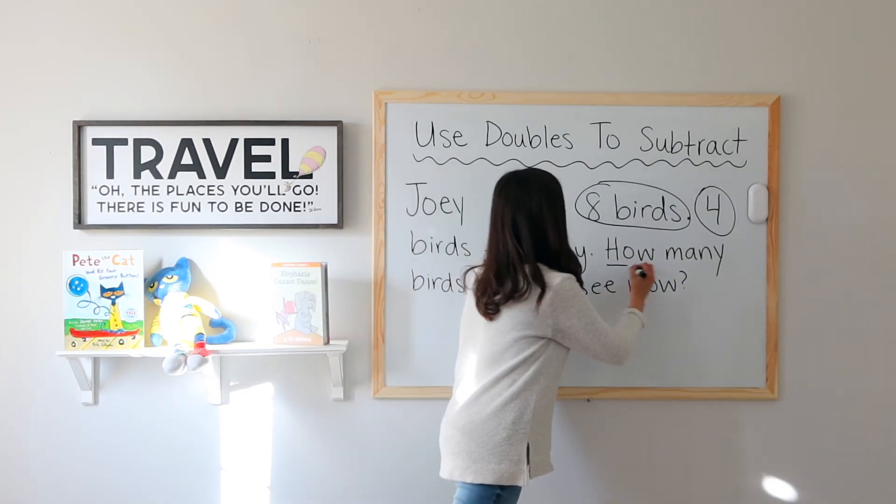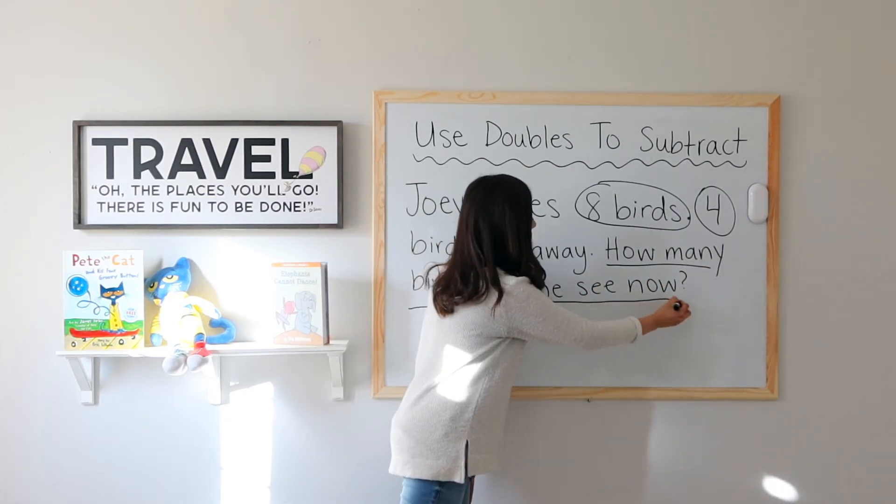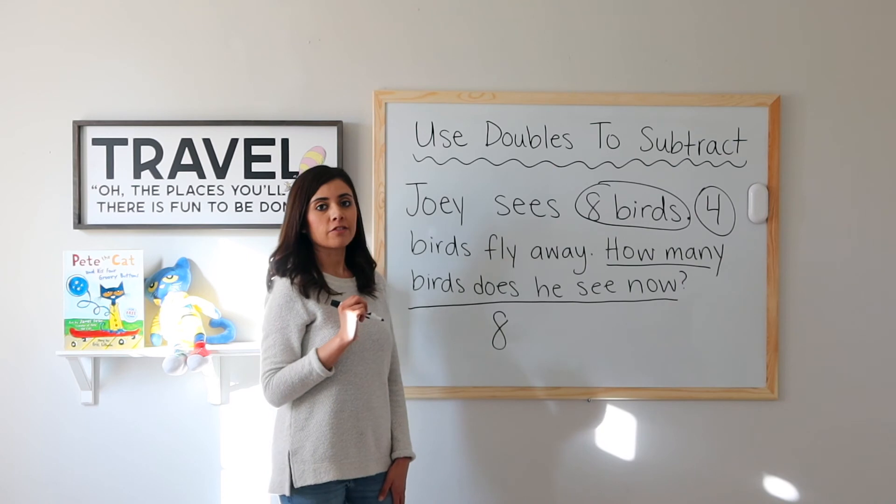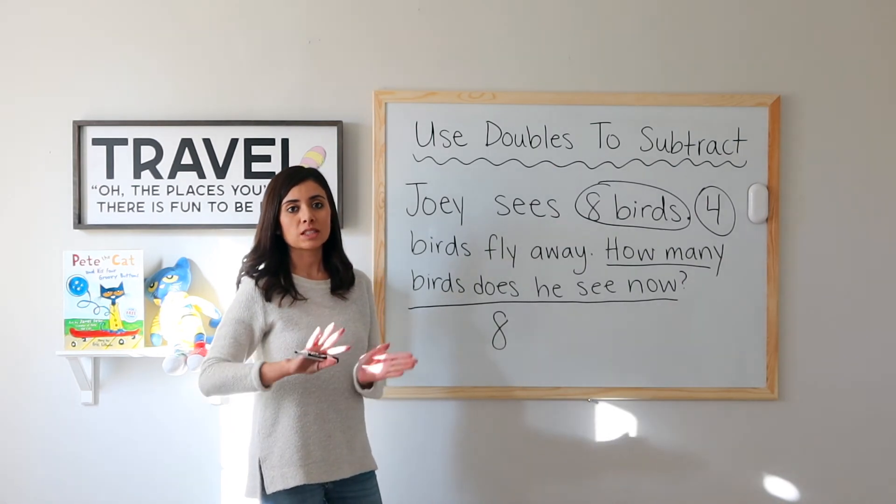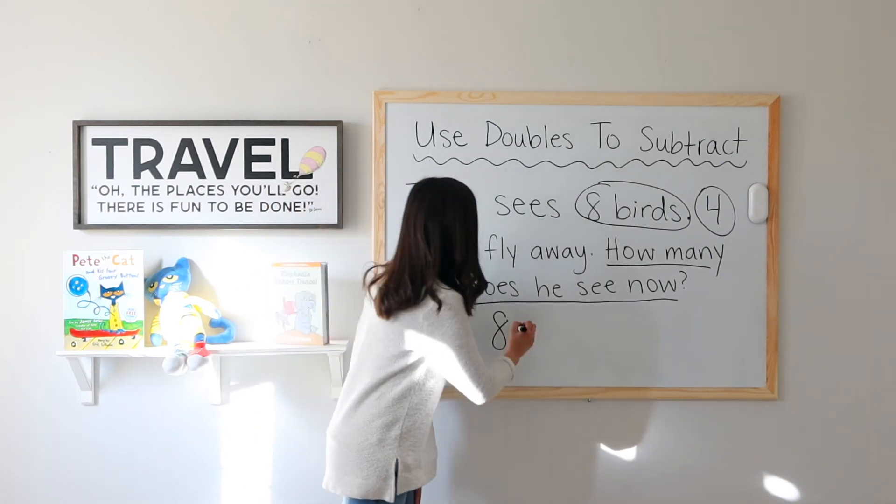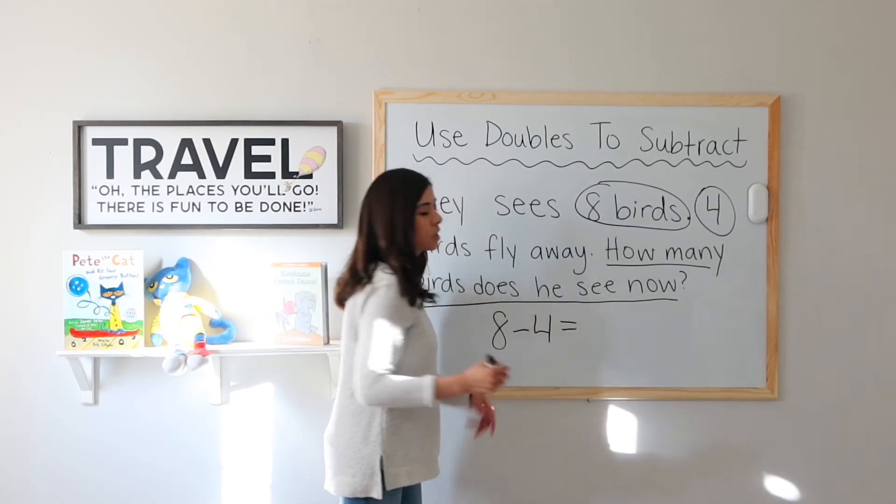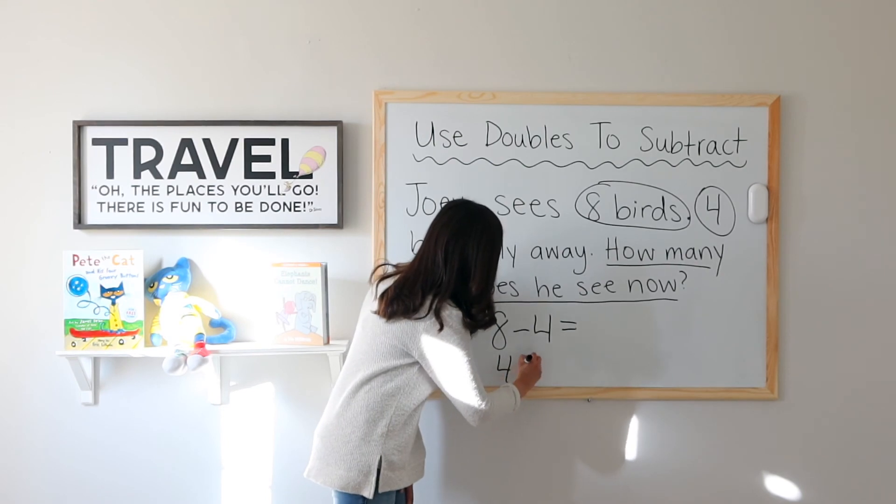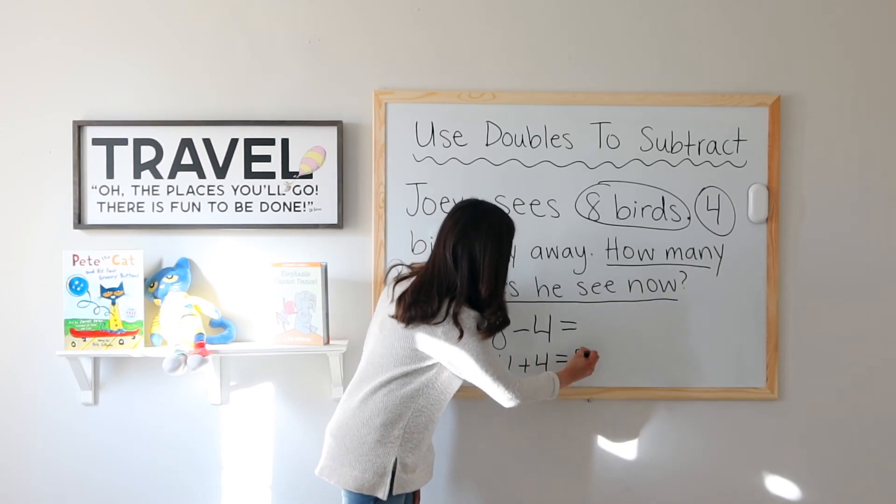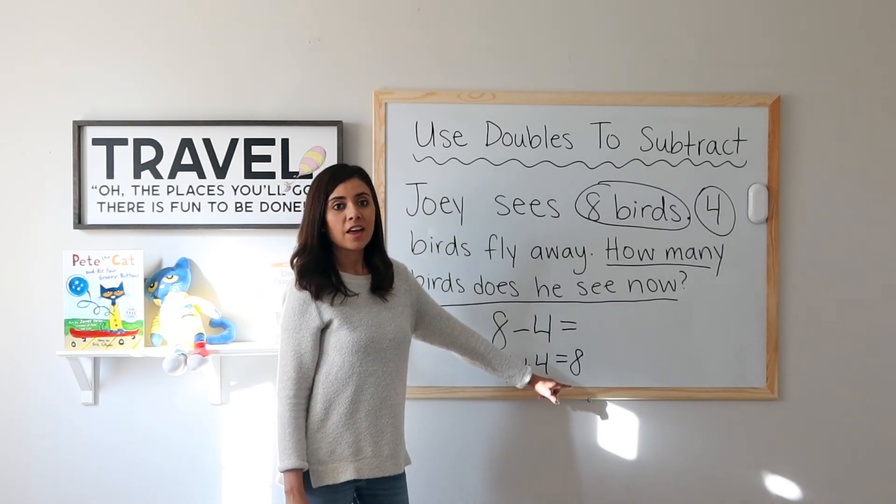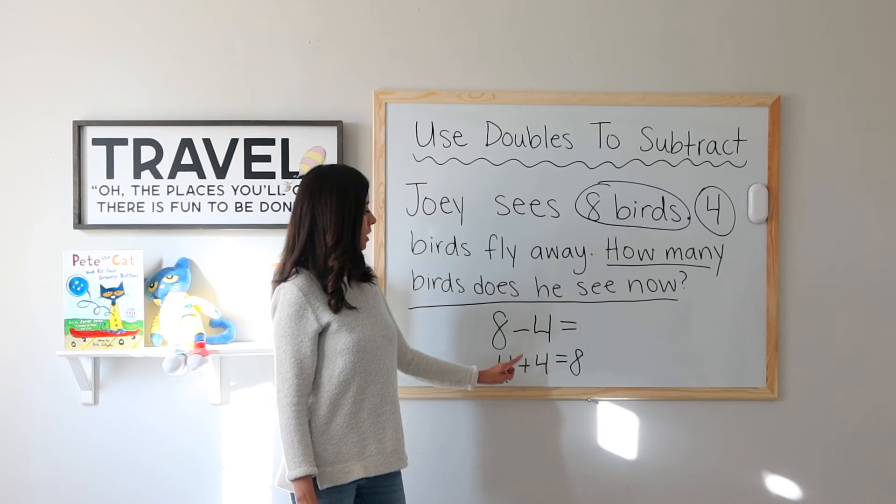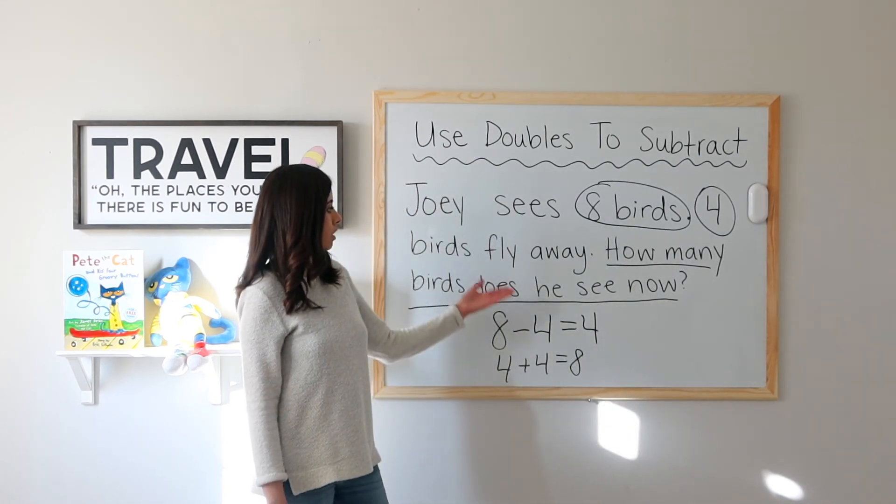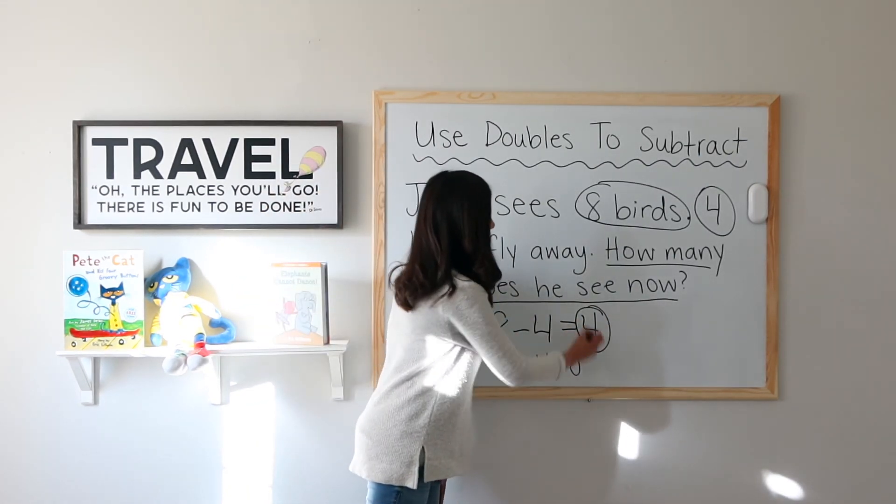Now we want to know how many birds does he see now? Well, if I started with eight birds and four flew away, I know that I have to subtract because when something goes away, we are subtracting. 8 minus 4 equals what? Because I've been practicing my doubles facts, I know that 4 plus 4 equals 8. If 4 plus 4 equals 8, that means that 8 minus 4 equals 4. So he saw four birds at the end.